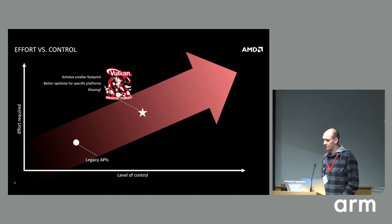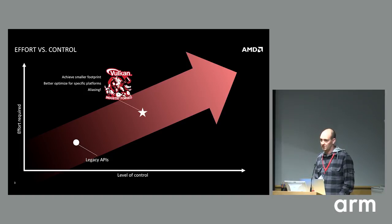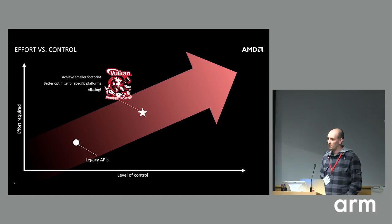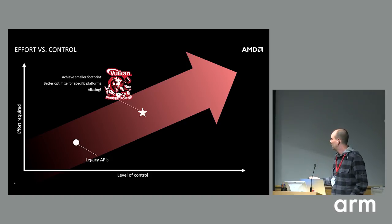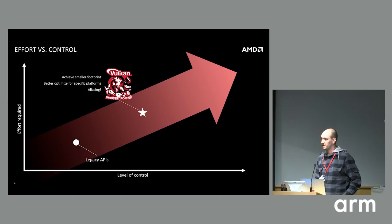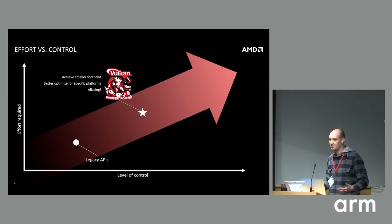Just to motivate the talk — this is why we're here. Not so long ago we had a minimum level of control, but it didn't really require much effort to use the APIs. These days we've traversed this huge arrow and we're around here where we have a lot more control. We can do more interesting things, but it takes a lot more effort. This is Vulkan and also D3D12, but this talk's just going to focus on Vulkan. We've got a good balance of control and effort, and we can do interesting stuff like optimize memory footprint, target more specific platforms, and do aliasing to keep our memory footprint down.